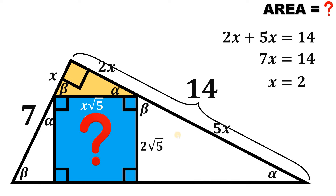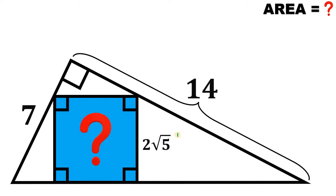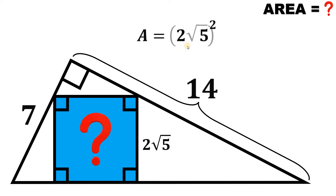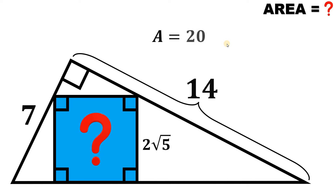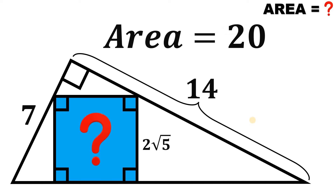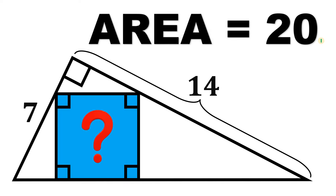Therefore, we can now find the area of this square, because we only need the side length. The side length is 2 times square root of 5, and the area is the side length squared — equal to (2 times square root of 5) squared, or 2 squared times 5. Since 2 squared is 4, and 4 times 5 equals 20, the area of the square inside this right triangle is simply equal to 20 square units. And as always, we are done.